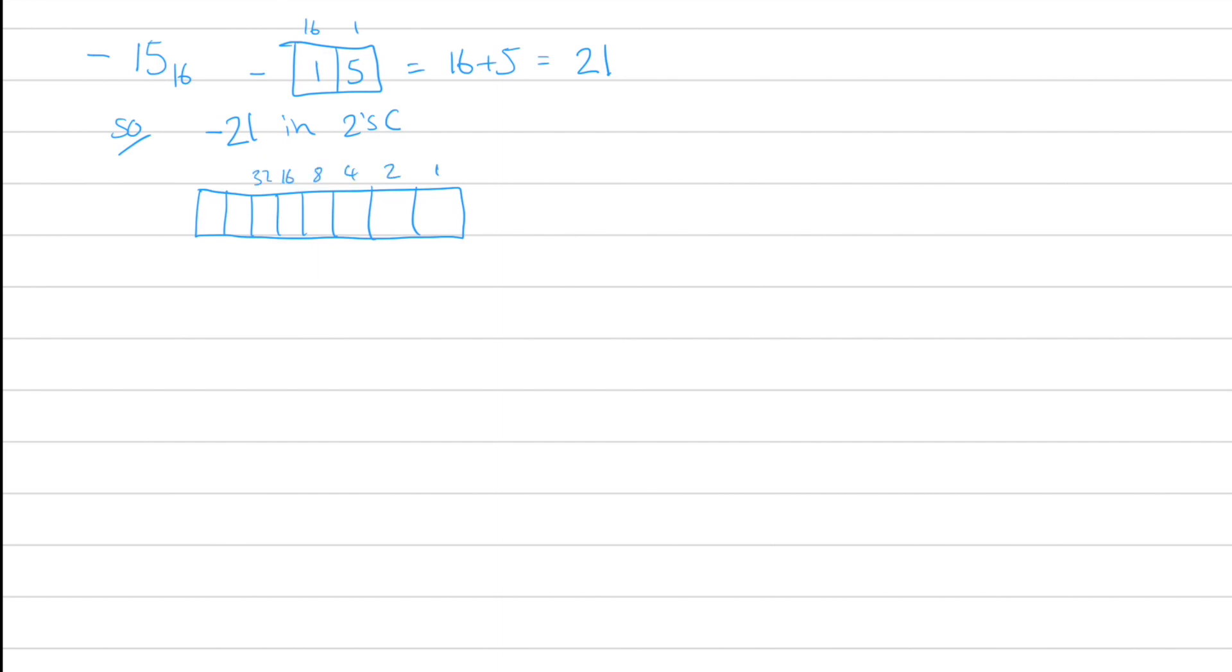Now, you could do your bit flipping if you want, but I don't particularly like that method. I prefer doing it this way, where we say that if I want to get into a negative value, I'm going to be using the minus 128. And then what do I need to add to 128 to get it up to minus 21? Well, I need to add a 64, a 32, an 8, a 2, and a 1 to get all the way up to that value.